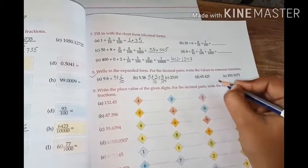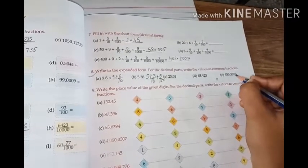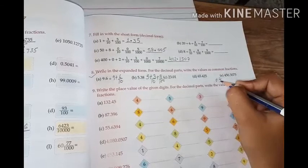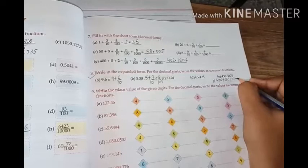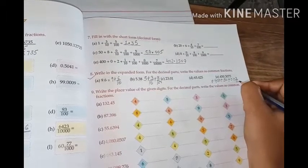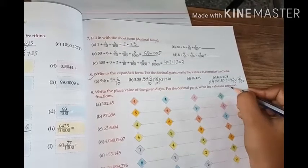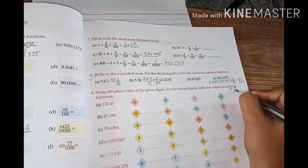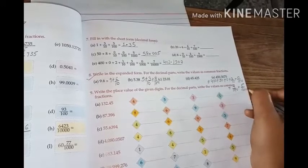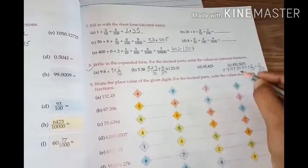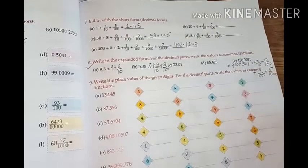Similarly, if I want to write this number 450.3075, so this will be written as 400 plus 50 plus 0 plus 3 by 10, 0 by 100, 7 by 1000, and 5 by 10,000. So you all can write them as much as the decimal parts, we can write them as common fraction.